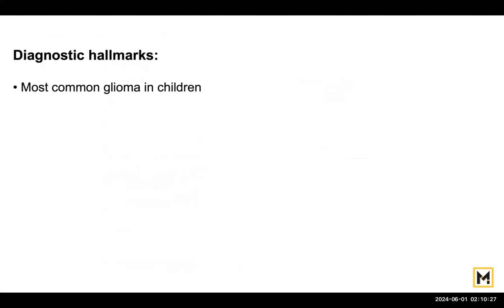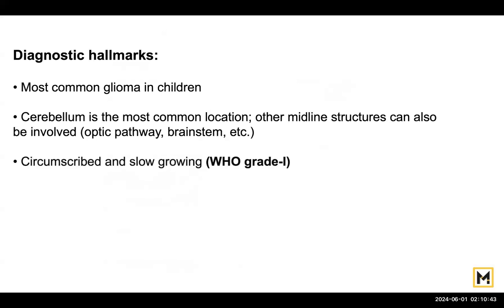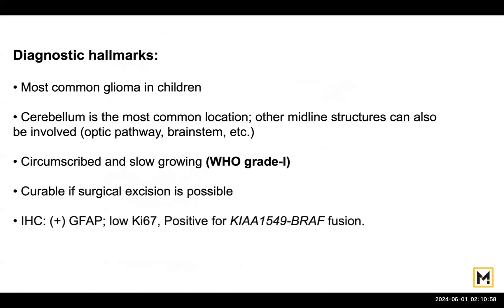This is the most common glioma seen in pediatric patients. The cerebellum is the most common location. Other midline structures can also be involved, such as the optic pathway, which may be the second most common location after the cerebellum. These are well-circumscribed, very slow-growing tumors, which is why they are graded as WHO grade 1. They are curable if surgical excision is possible, though access can sometimes be difficult because of the cerebellar location. IHC is positive for GFAP.